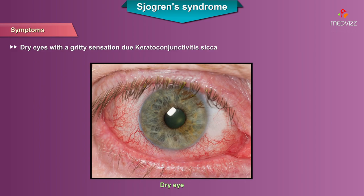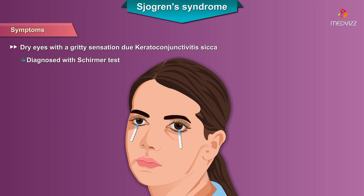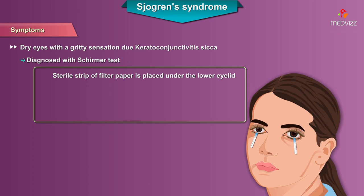Patients present with dry eyes with a gritty sensation due to keratoconjunctivitis sicca, which can be diagnosed with the Schirmer test. The Schirmer test involves placing a sterile strip of filter paper under the lower eyelid; the area moistened by absorbed fluid is measured after 5 minutes and compared to a normal person.